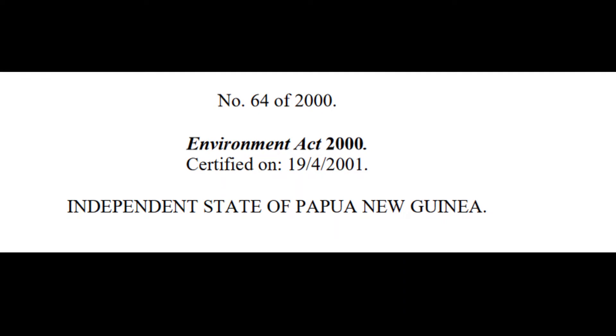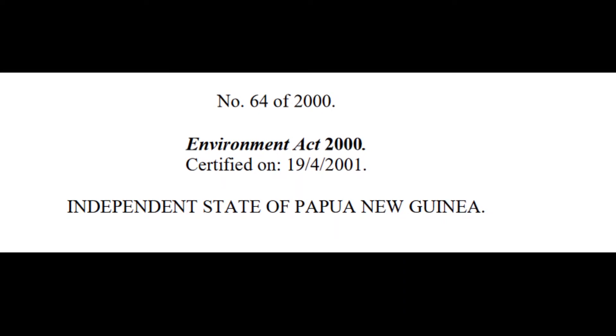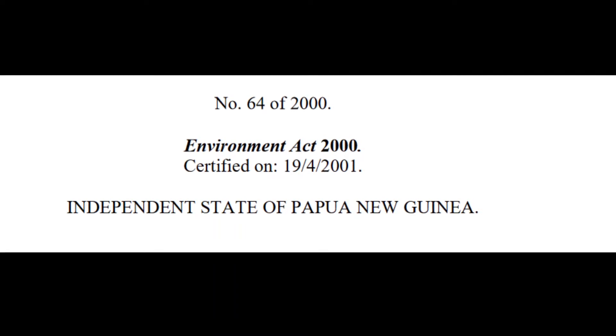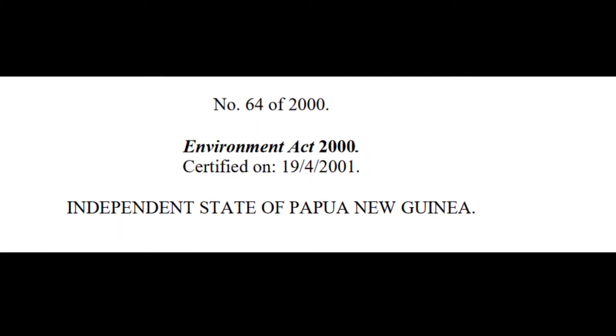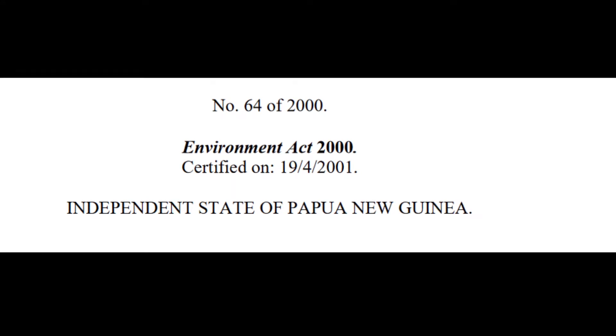This Environmental Act 2000 is for the sole purpose of Section 53, Subsection 1 of the Constitution, where its purpose permits the protection of the environment from environmental harm and to control, prevent and minimize the contamination of the environment.